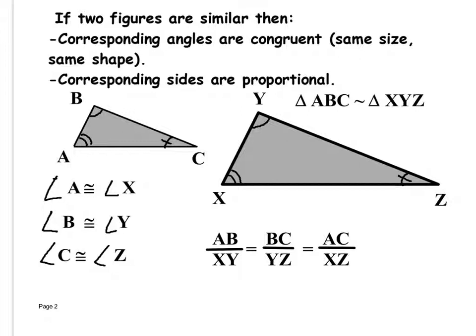Even though the sides are not the same length, they're proportional — there's a ratio, just like everything we've done this week. It's all about ratios, like scale on a map. On your homework the map scale was one inch equals 20 miles, so the distance between St. Louis and Kansas City was 260 miles because it was a ratio — it was proportional.